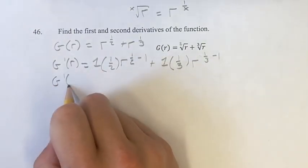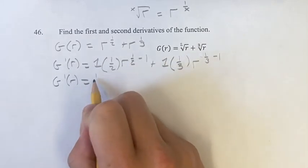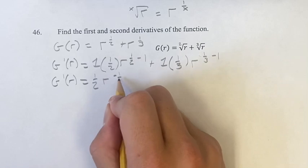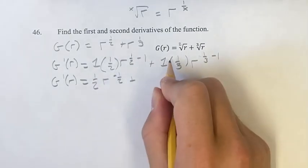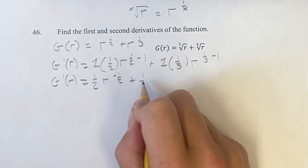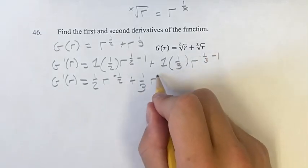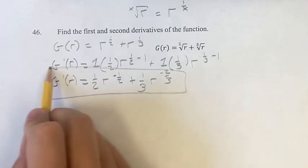Simplify this and you get your first derivative. g prime of r is 1 times 1 half is 1 half, r to the 1 half minus 1 is negative 1 half, plus 1 times 1 third is 1 third, r to the 1 third minus 1, this is negative 2 thirds, and this is going to be your first derivative.